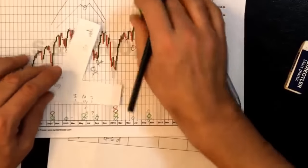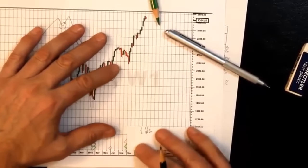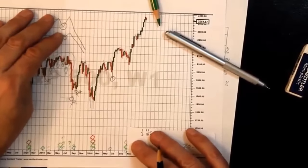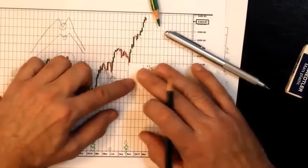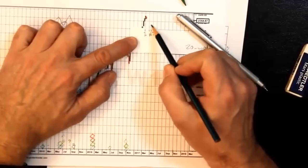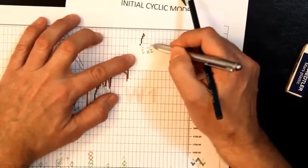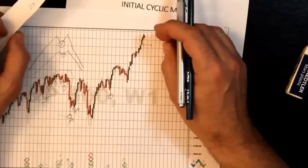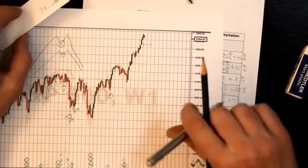Moving forward to find another 20-week cycle trough from the most recent 40-week cycle trough — that was around beginning of November 2016. We move the piece of paper forward and we're just entering the period of time in which we're expecting a 20-week cycle trough. So the answer is: we probably haven't seen a 20-week cycle trough yet, but we are entering that expected window.